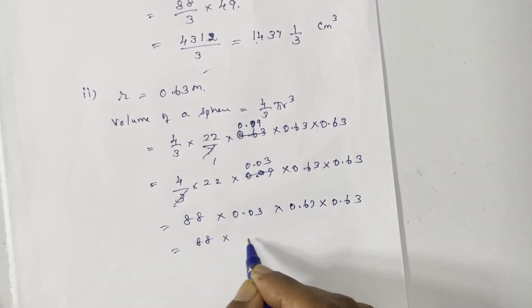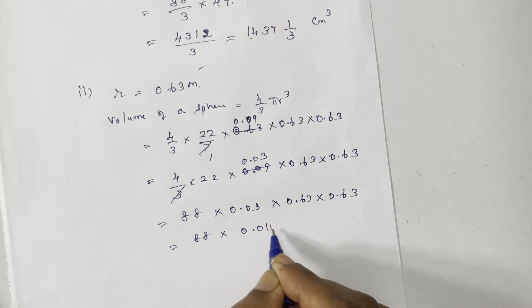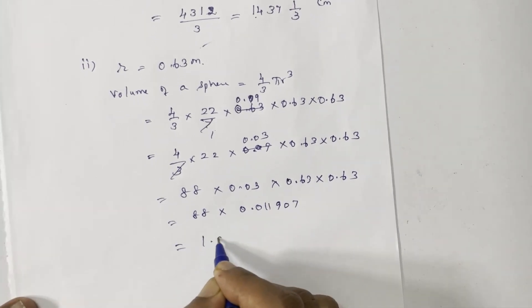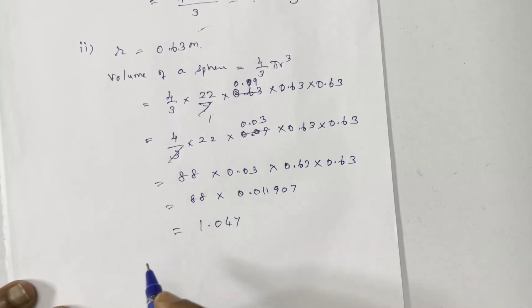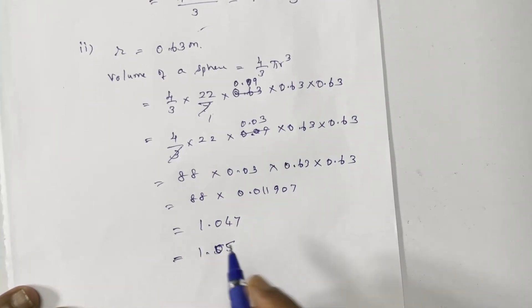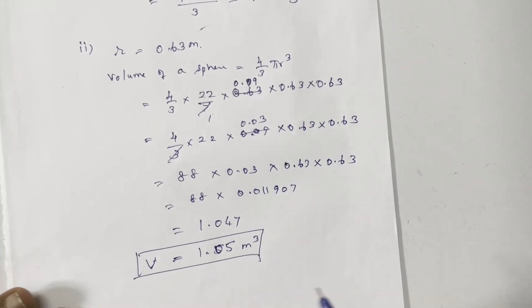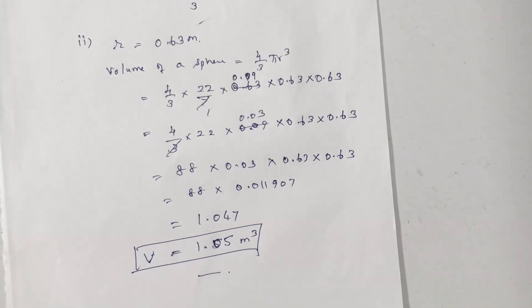Decimal part, how to multiply this number. After multiplication, round up to 1.05 meter cube. Volume of a sphere is 1.05 meter cube.